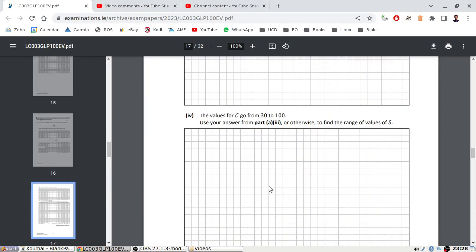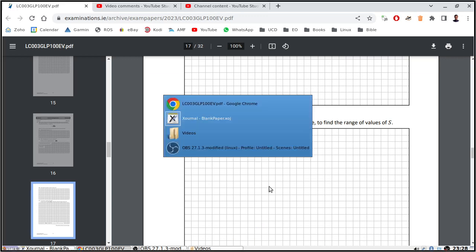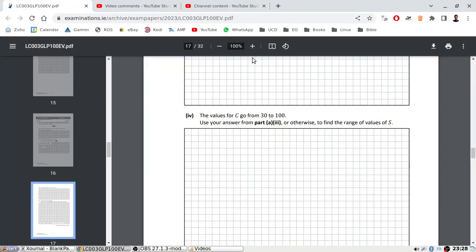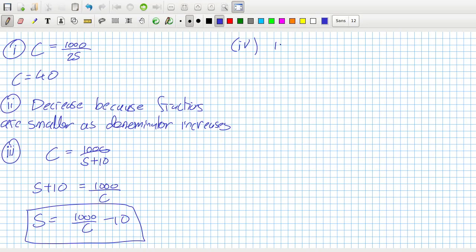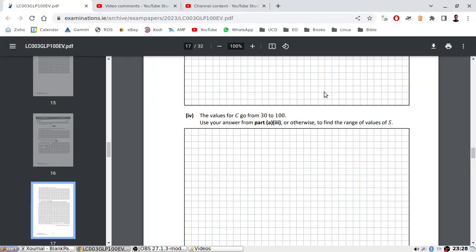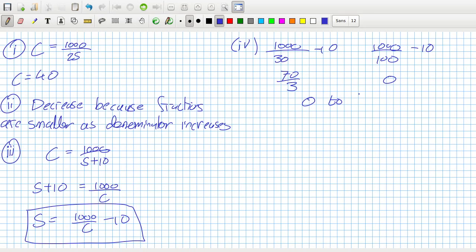The value for C goes from 30 to 100. Use your previous answer to find the range for S. It's just a matter of putting in 30 and 100. So 1000 over 30 minus 10 and 1000 over 100 minus 10. 1000 over 30 minus 10 is 70 over 3, and replacing with 100, this is zero. So the range would be 0 to 70 over 3. They don't say decimals, so I'll just say 70 over 3, which is roughly 23.3 recurring.